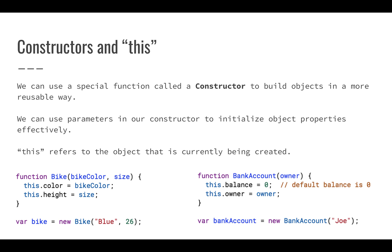A constructor is a special kind of function. Even though we say function, we're really defining something that's going to give us an object. It's a little different because when we define the function we're not returning anything, but we access it using new. Before, when we defined a regular function we called it just by using the function name. With a constructor, we use new, which tells the program we want a new object, saving space for it so we can use it later.